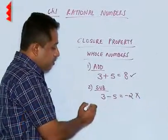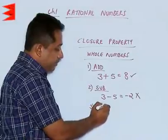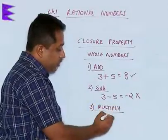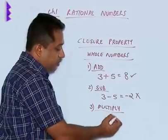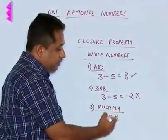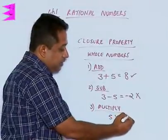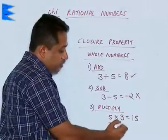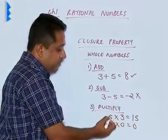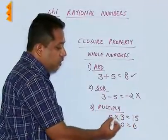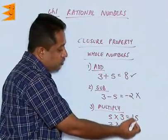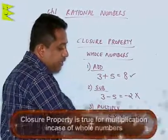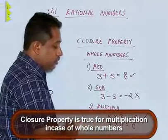What about multiplication? When we multiply two whole numbers, let us say 5 multiplied by 3, we get 15. Also, 7 multiplied by 0 is equal to 0. We find that when we multiply two whole numbers, the result is also a whole number. So I can say that for multiplication, the closure property holds good.